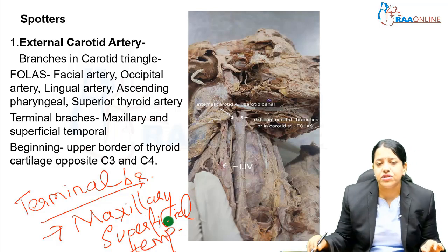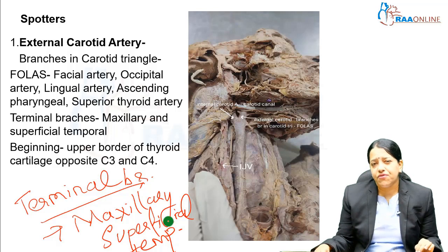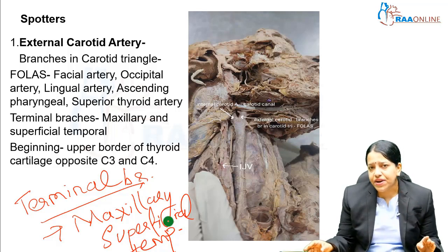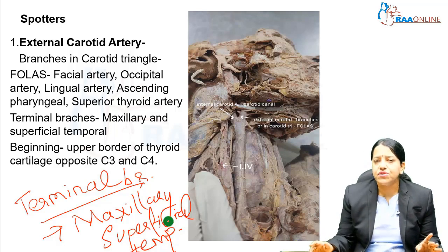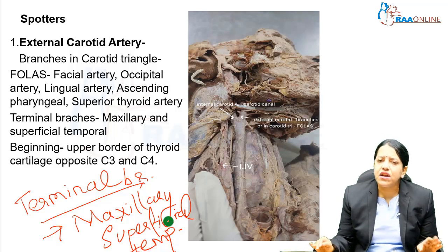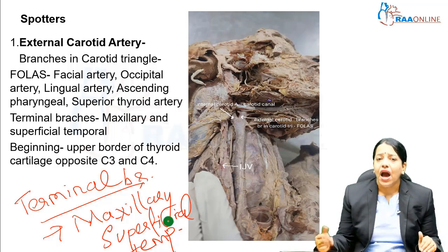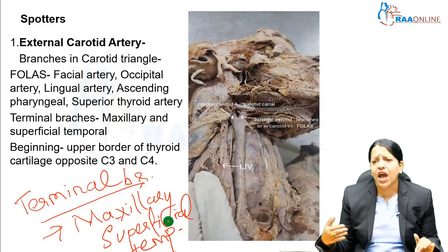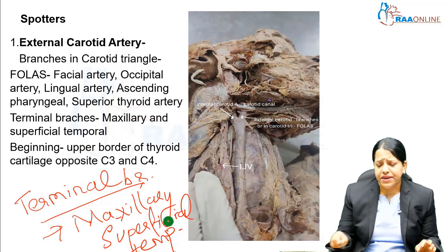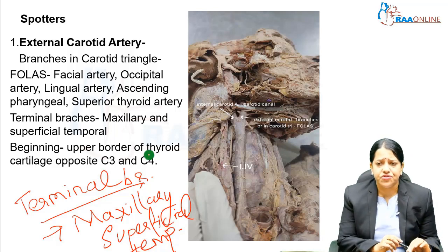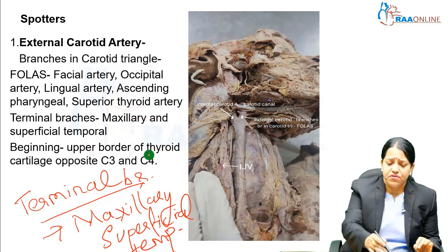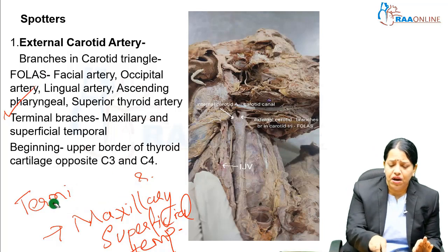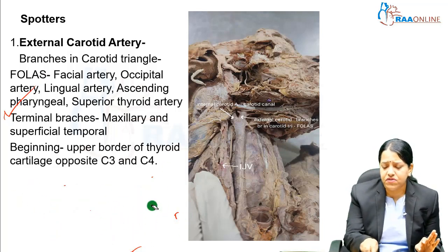These are the common spotter questions asked whenever the external carotid artery is put as a spot identifier. You identify the structure, write that it is the external carotid artery, and then answer tag questions: branches in the carotid triangle, terminal branches, or the position where it begins — at the upper border of the thyroid cartilage, opposite C3 and C4 vertebra.